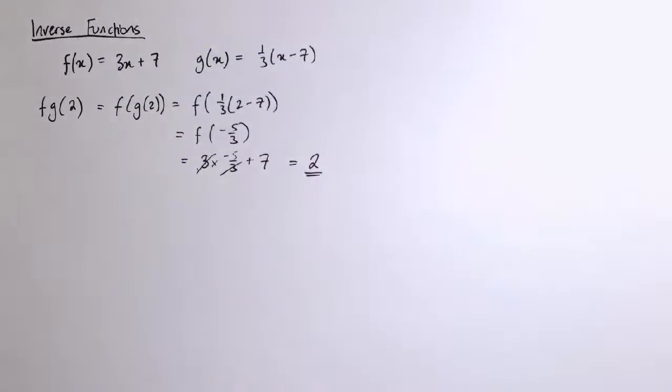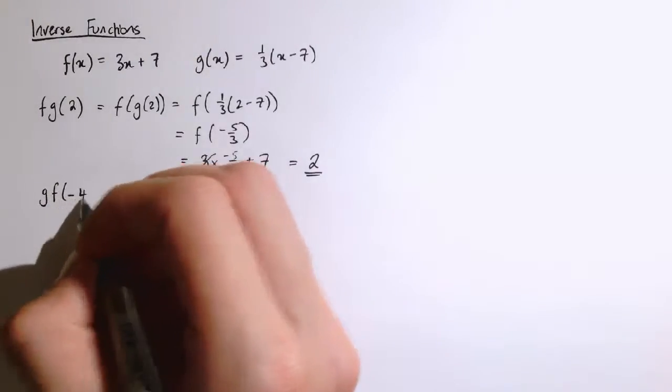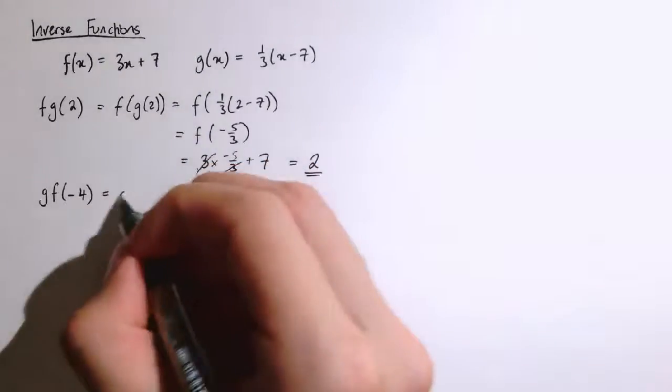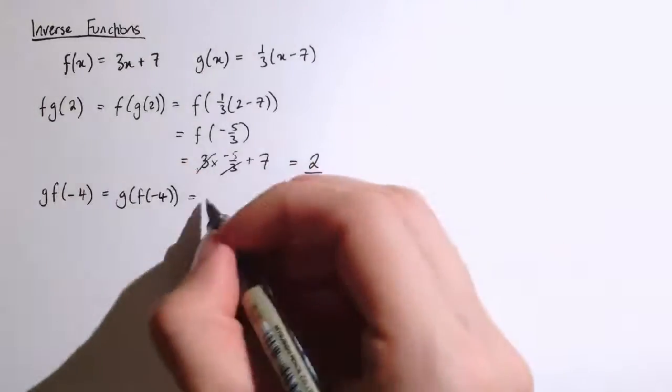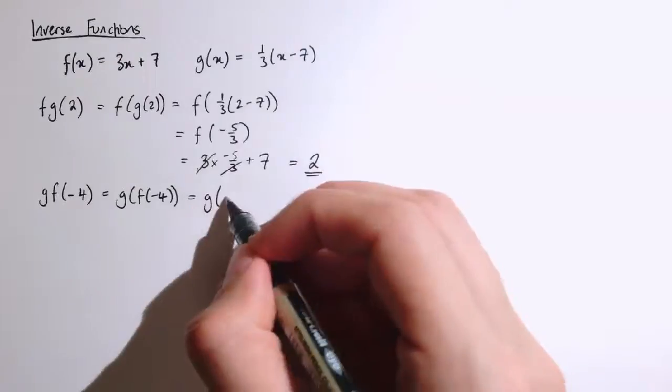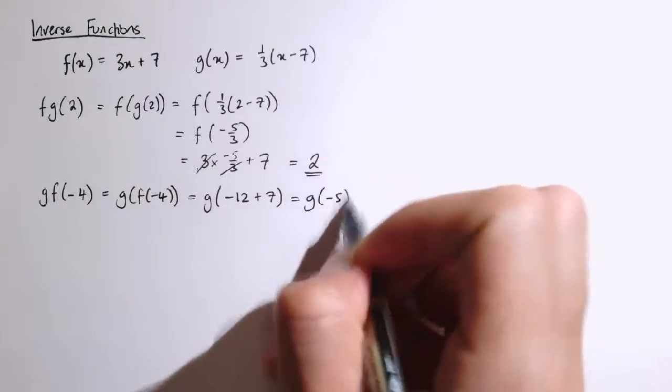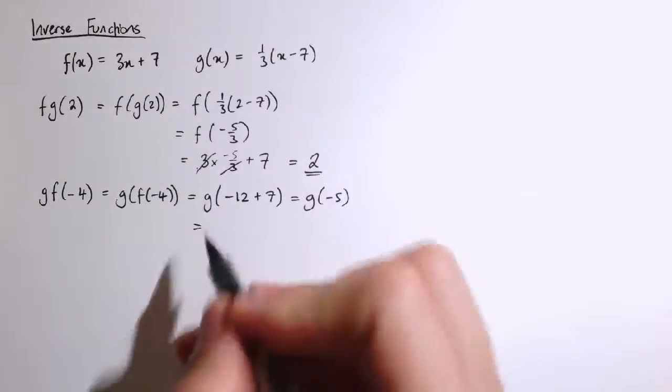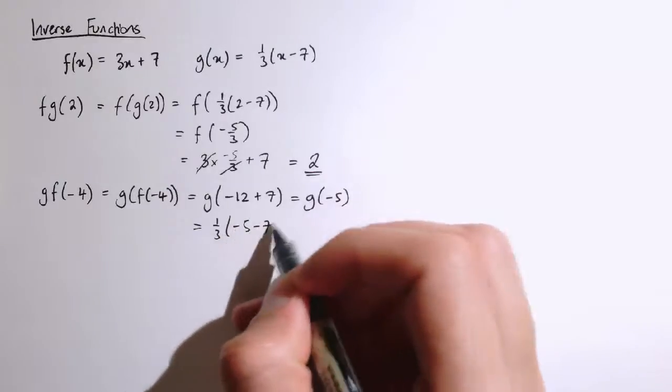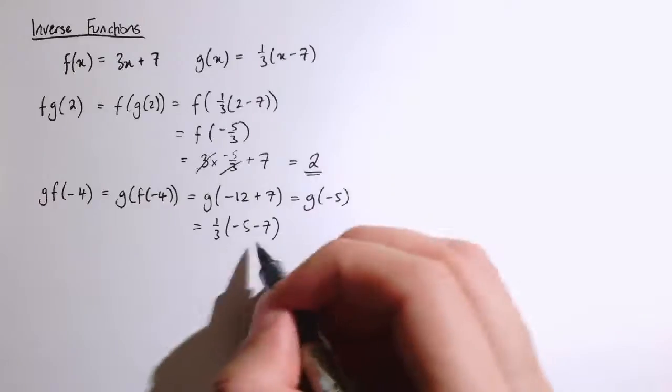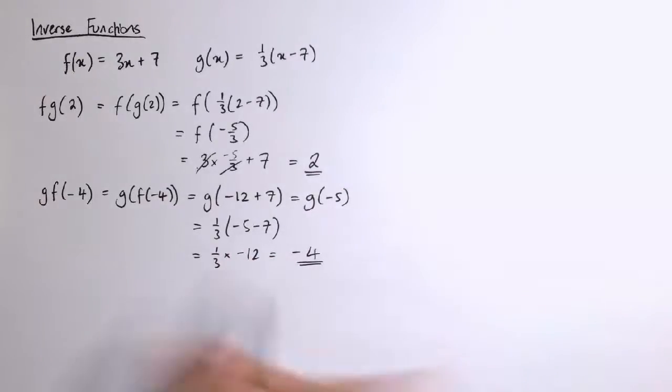So actually that was the value that I started with. If I do g of f of minus 4, well that's g of f of minus 4. F of minus 4 is 3 times minus 4 plus 7, so that's minus 12 plus 7, so this is g of minus 5. And if I put in minus 5 to g, that's one third of minus 5 minus 7, or one third of minus 12, which is minus 4. So that's got us back to where we started.